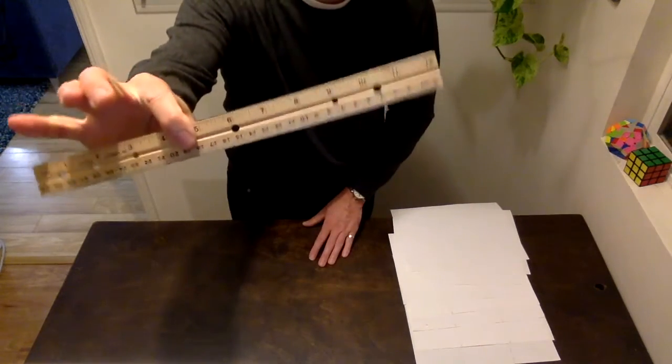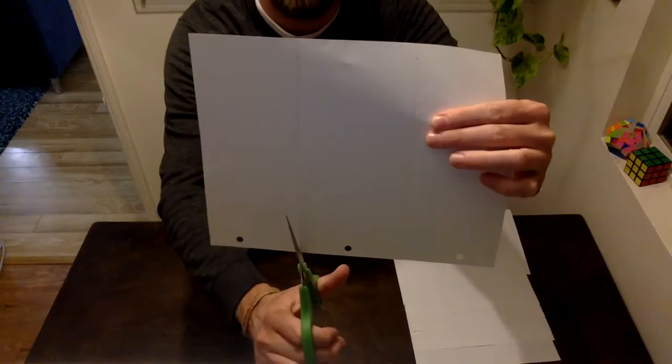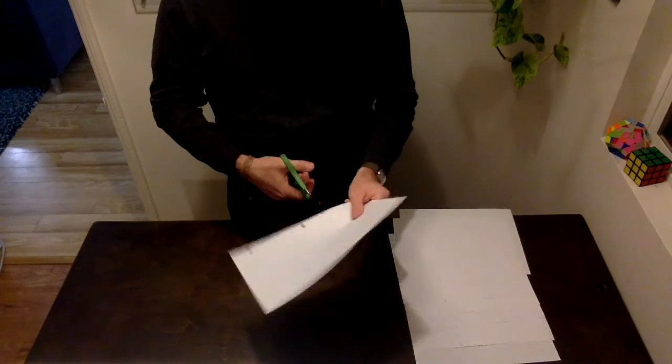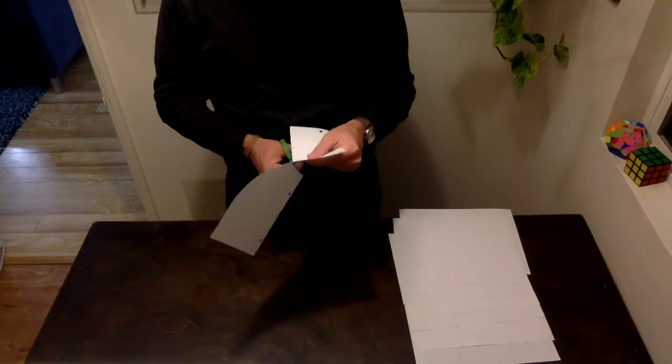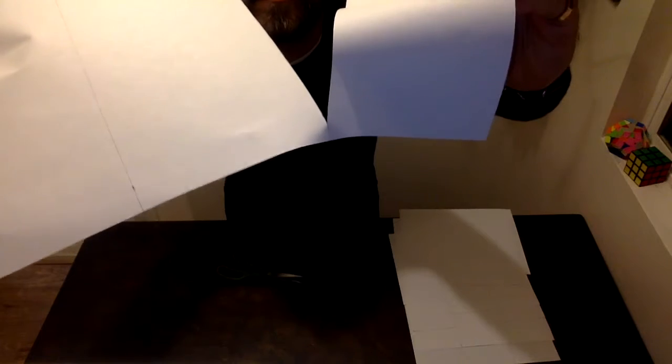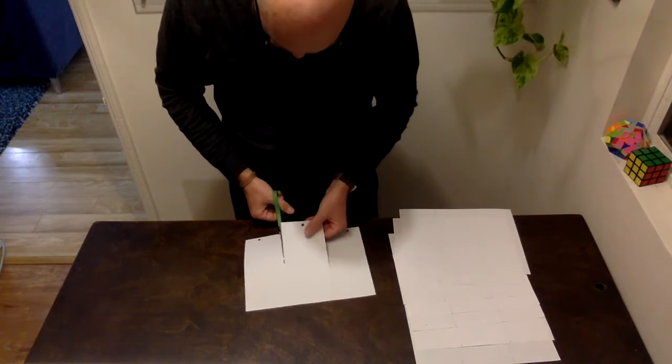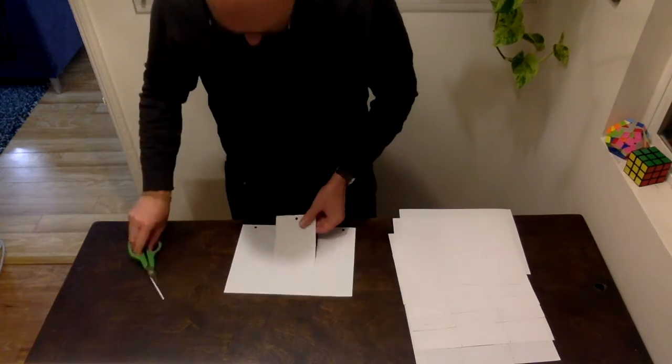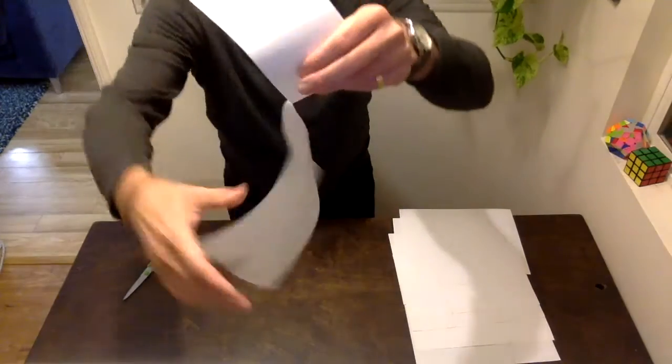Okay, go ahead and put your ruler away and then grab your scissors. We're gonna cut along those lines, but don't cut all the way across - leave about half a centimeter remaining. And cut along that second line and again leave about half a centimeter remaining.